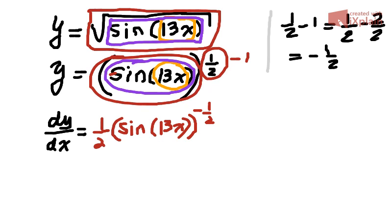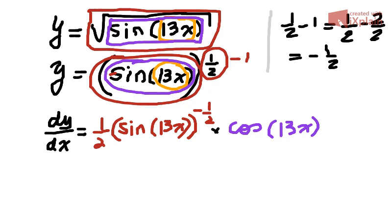Now we multiply by the second layer, the purple one. The derivative of sine of something is cosine of that same something — so cosine of 13x. Then we multiply by the derivative of the very inner function, which is just the linear function 13x. The derivative of that is 13.